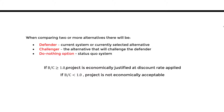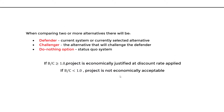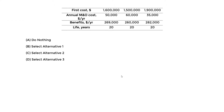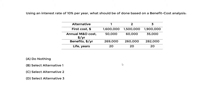We will look at the do-nothing option first — it represents the status quo system. When doing this benefit-cost analysis, if the benefit-cost ratio is greater than or equal to one, the project is justified at the discount rate applied. If it's less than one, the project is not economically acceptable.